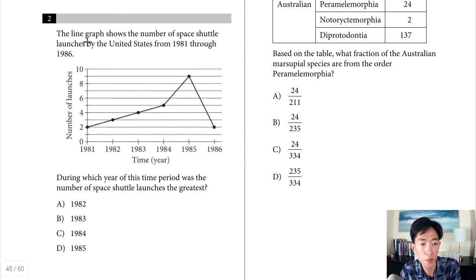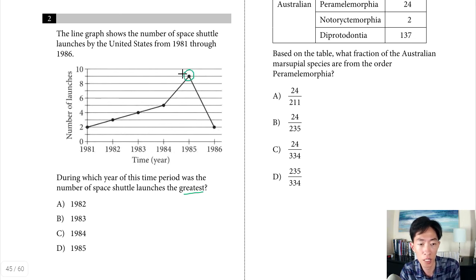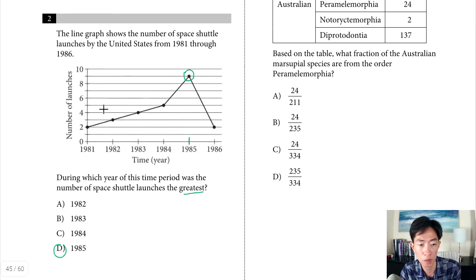Question 2: the line graph shows the number of space shuttle launches by the U.S. from 1981 through 1986. Number of launches is on the y-axis, time on the x-axis. The question asks during which year the launches were greatest — simply find the highest point, which shows nine launches in 1985. We're not looking for rate of change, just the greatest number.